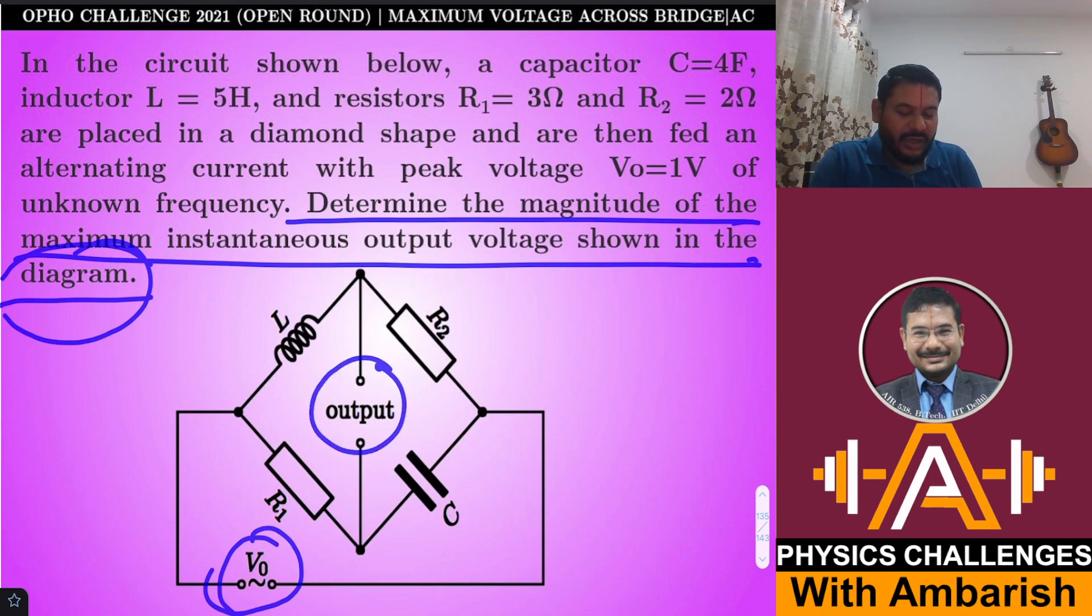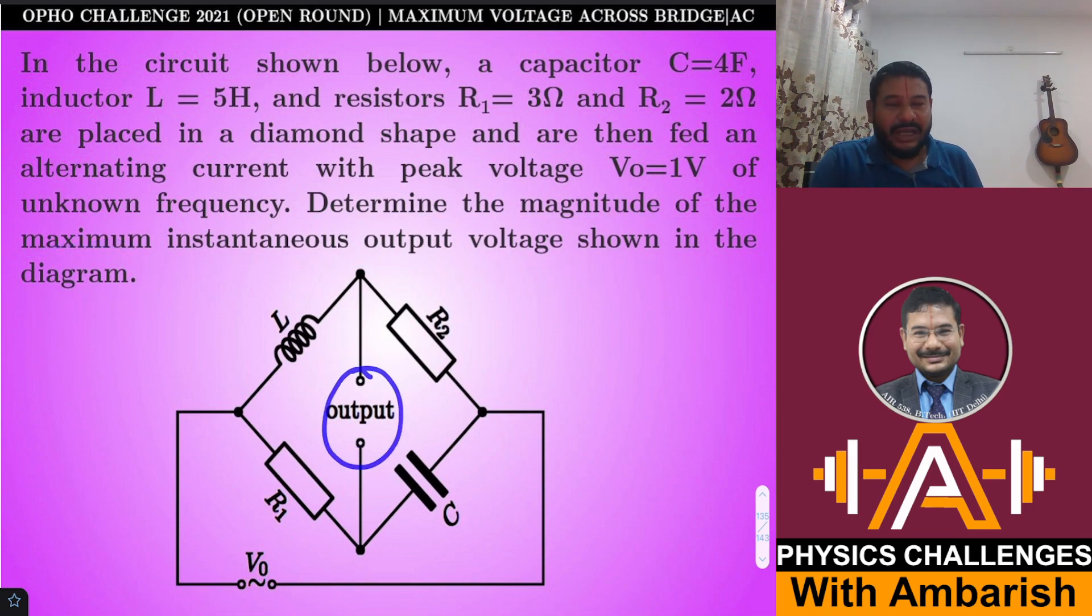So this has peak voltage 1 volt. We have to tell what is the maximum possible output voltage. The question doesn't explicitly mention it, but it's understood that we are varying the frequencies, and at certain frequency the output voltage will have a maximum amplitude. We have to find that maximum possible amplitude. If you want, you can give it a try. I will present my analysis right away.